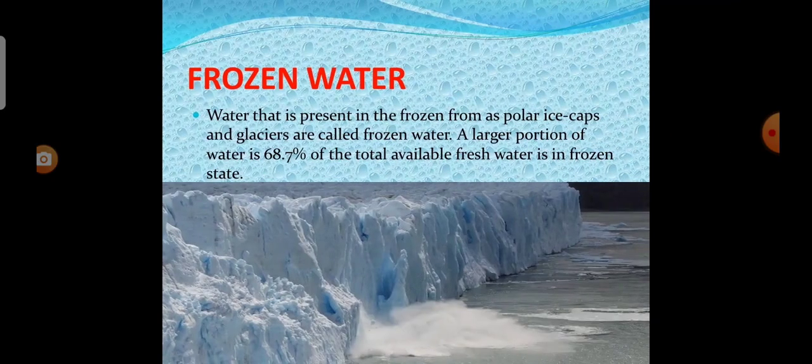Next one is frozen water. Water that is present in the frozen form as polar ice caps and glaciers is called frozen water. A large portion of water, 68.7% of the total available fresh water, is in frozen state. And the last type is groundwater. Groundwater is the water present beneath the earth's surface in soil. This water is obtained through springs, open wells, tube wells, or hand pumps.